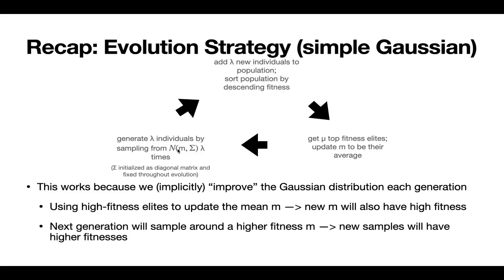And finally, in this generation, it updates the distribution parameters — in this case just the mean M — and it updates it to the average across those high fitness elites. Now, I don't think we ever explicitly talked about why this entire procedure works. But if you think about it, the real optimizing part of this procedure is when we update the distribution parameters — in this case the mean M. Because every generation, when we update the mean M, we are updating it to the average across elites, which are likely going to have higher fitnesses than the old mean.